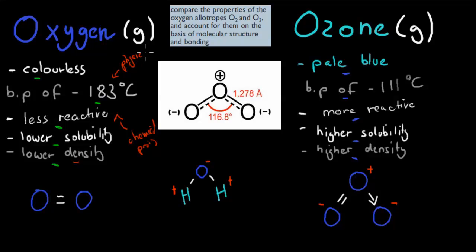I've given you the most important properties you should know. We've compared the properties of oxygen allotropes — ozone and normal oxygen gas. That's the first part. But the second part says: account for them on the basis of their molecular structure and bonding. We still have to do that part.